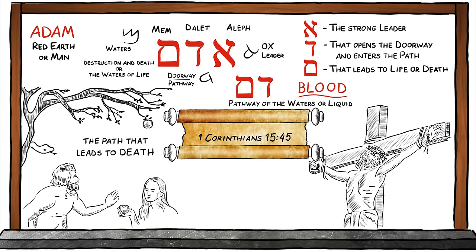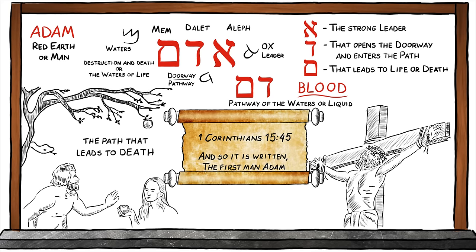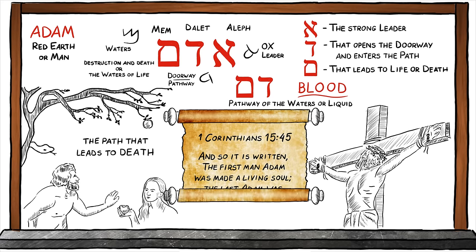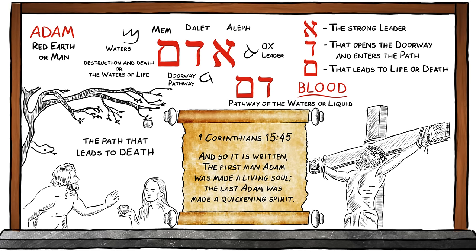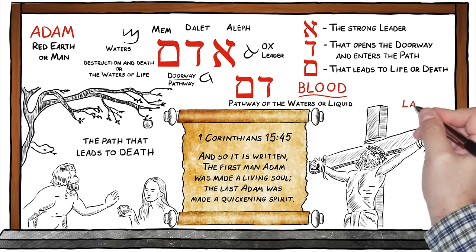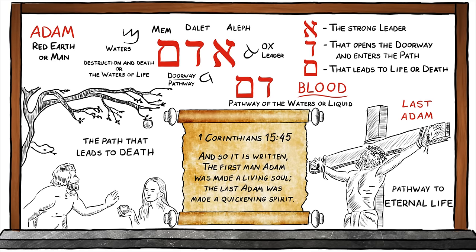In 1 Corinthians 15:45 we read these words: 'And so it is written, the first man Adam was made a living soul; the last Adam was made a quickening spirit.' Notice that Yeshua is called the last Adam. He came to earth to open up another doorway, another pathway — not a pathway that leads to chaos, confusion, and death, but a pathway that leads to life eternal, a pathway he opened by his sacrificial atoning death on the cross of Calvary.